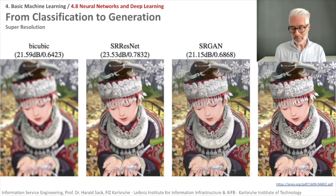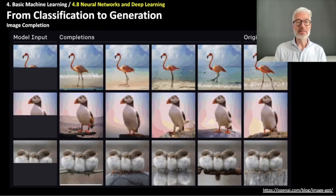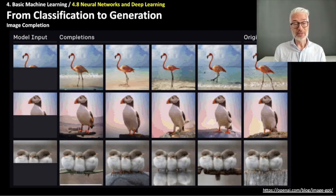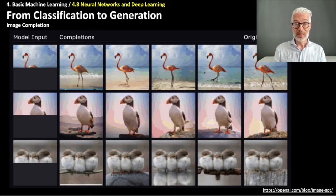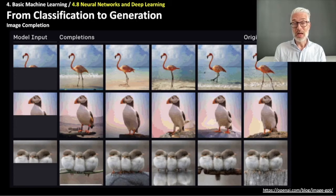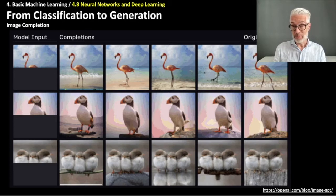Another impressive capability is image completion. Only part of an image is presented to the neural network. On the left side you see the model input, on the right side the original picture, and in the middle the suggestions created by the system. For the flamingo, for example, it's unclear how the legs of the bird might stand, so you see different variations — but nevertheless the system creates a plausible picture.